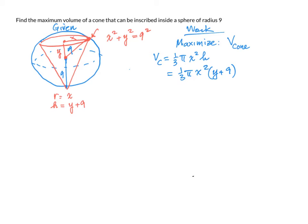Now, we need to reduce volume into one variable. Since we already have x squared, I'm going to solve for x squared using the given equation. So x squared equals 81 minus y squared.